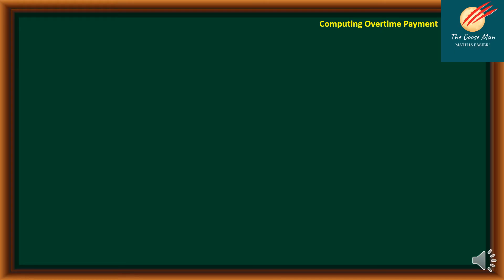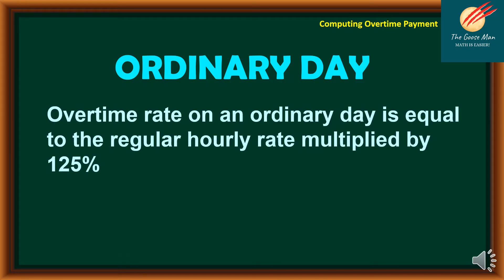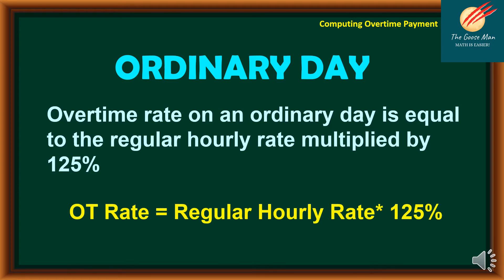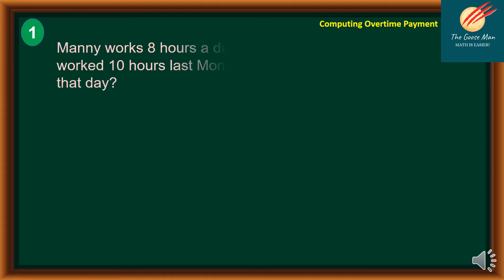Let's talk about the ordinary day first. The ordinary day is the most common basis for overtime. The overtime rate for an ordinary day is equal to the regular hourly rate multiplied by 125%. So: OT rate = regular hourly rate × 125%.